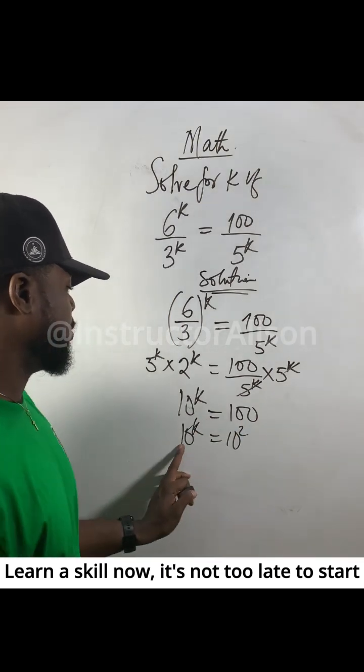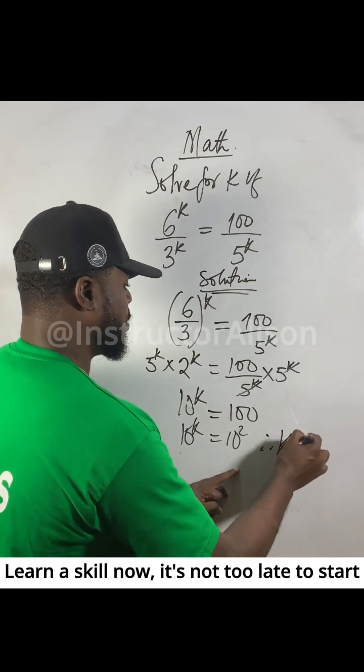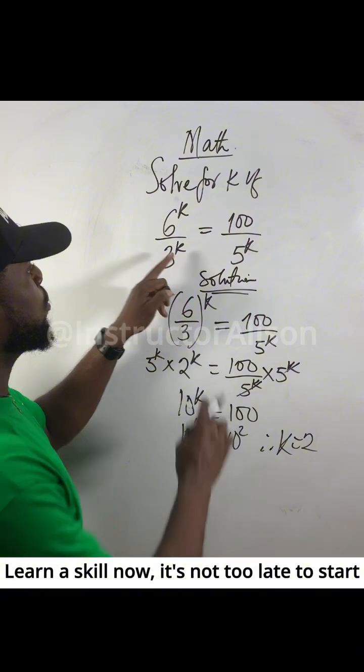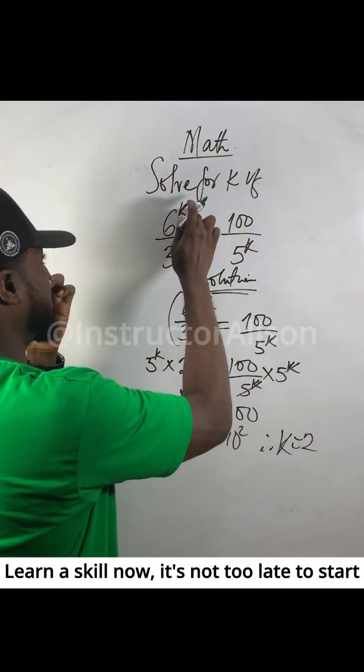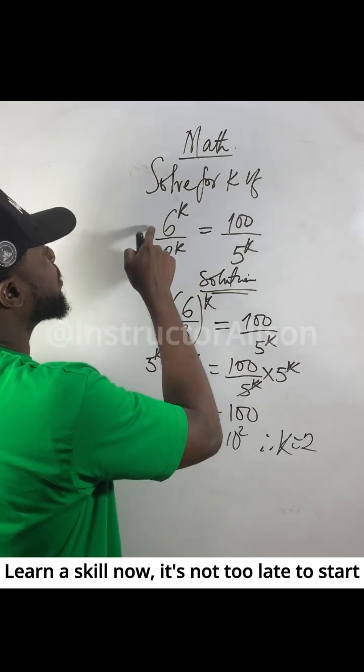Since the bases are the same, the powers are equal, so k equals 2. We can verify by putting k as 2. Six to the power of 2 is 36.